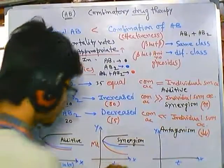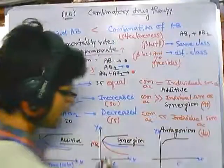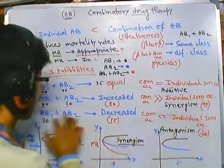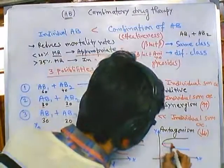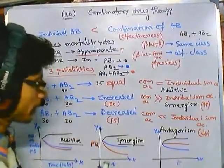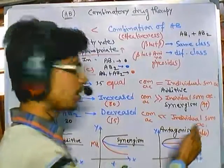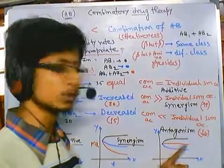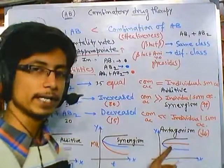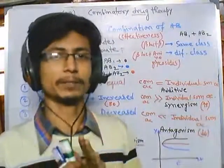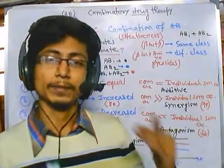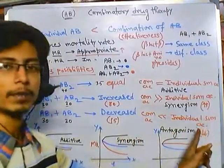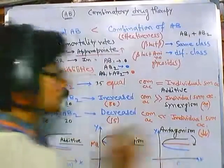In the third graph showing antagonism: antibiotic one stabilizes growth, antibiotic two shows some killing activity on its own. But when both antibiotics are used together, the combined line levels out — it doesn't kill as many microorganisms as antibiotic two alone was doing. The combination activity is decreased compared to the individual sum of antibiotic activities. This is antagonism.